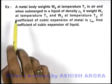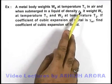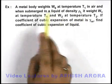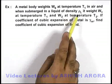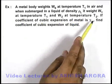In this example, a metal body weighs W₀ at temperature T₁ in air, and when submerged in a liquid of density ρₗ it weighs W₁ at temperature T₁ and W₂ at temperature T₂.